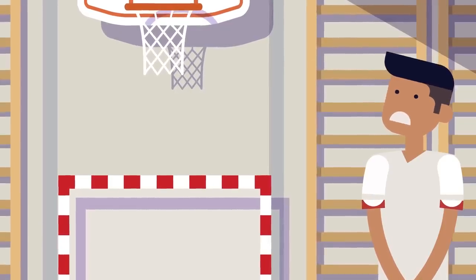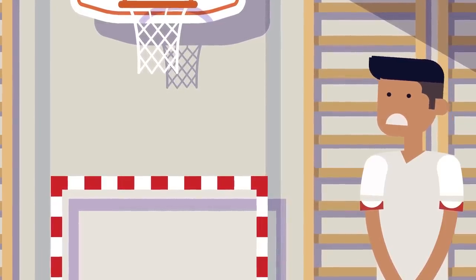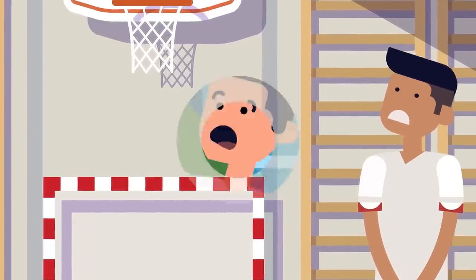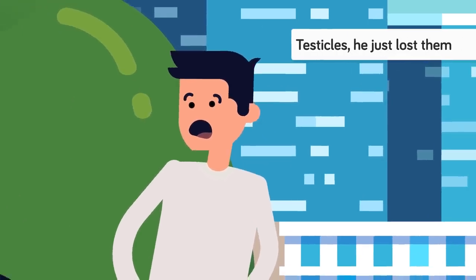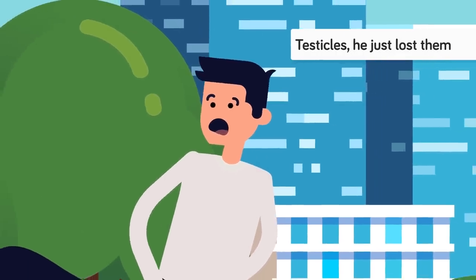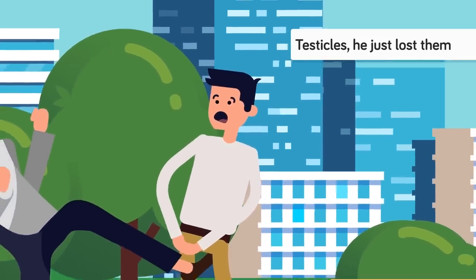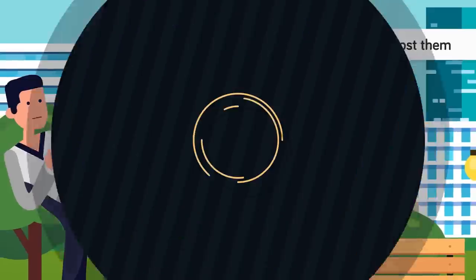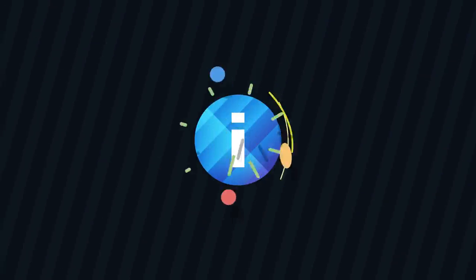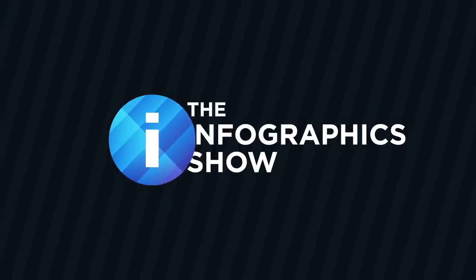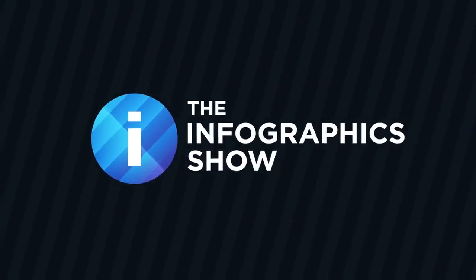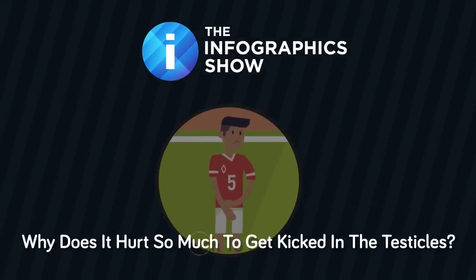In worse cases, it can actually do a fair bit of damage, or at least make you throw up. According to Snopes, who asked the question, is it possible to kill a man with a swift kick to the groin? The answer is no. Getting a blow to the privates, gonads, nuts, stones, bollocks - there are more terms - won't be the end of you. But let's find out why it's so painful in this episode of the Infographics Show. Why does it hurt so much to get kicked in the testicles?